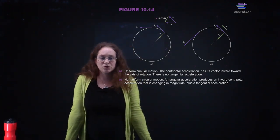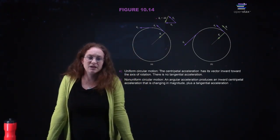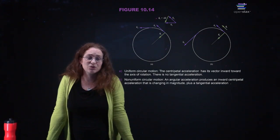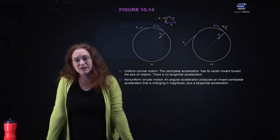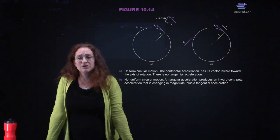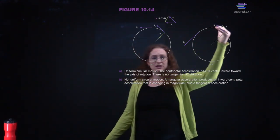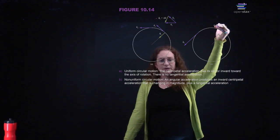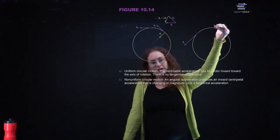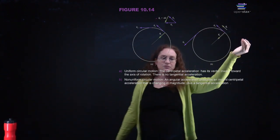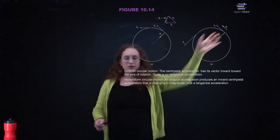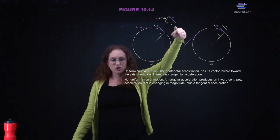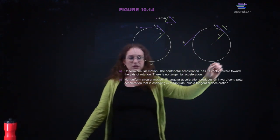For uniform circular motion, if you have centripetal acceleration, the vector is pointing inward towards the axis of rotation. In this case, if it's uniform, there is no tangential acceleration. But if you are speeding up or slowing down, you have both centripetal acceleration as well as tangential acceleration — the tangential acceleration indicates whether something moving here is going to speed up or slow down.